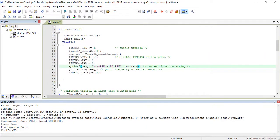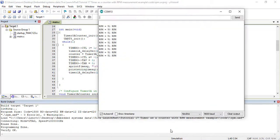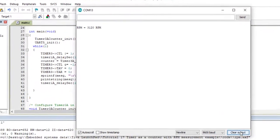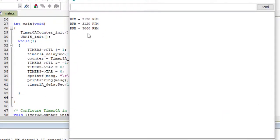We forgot to multiply counter value with 60 to convert revolutions per second into revolutions per minute. Again upload the code and check output. For all resources of this project, please check the link given in the description of this video. Thank you.